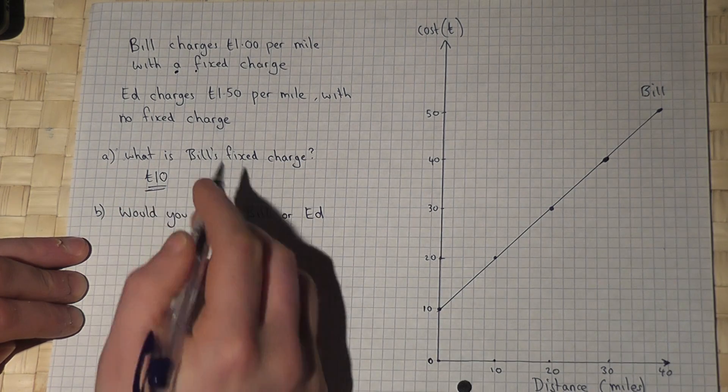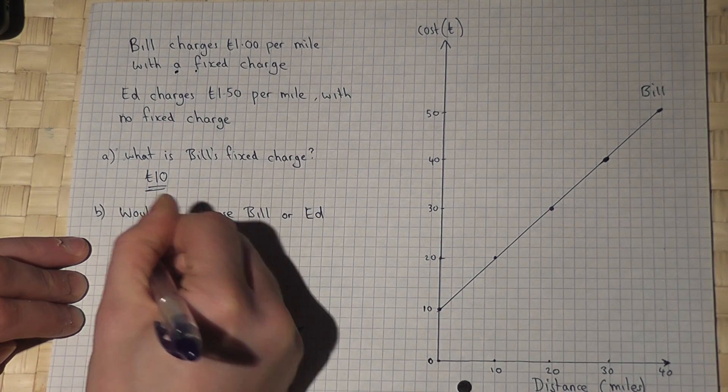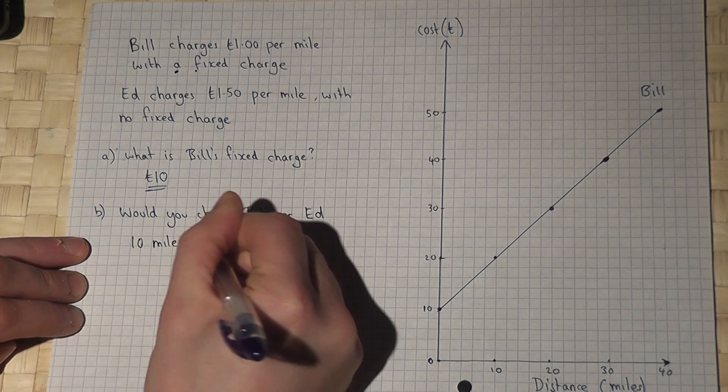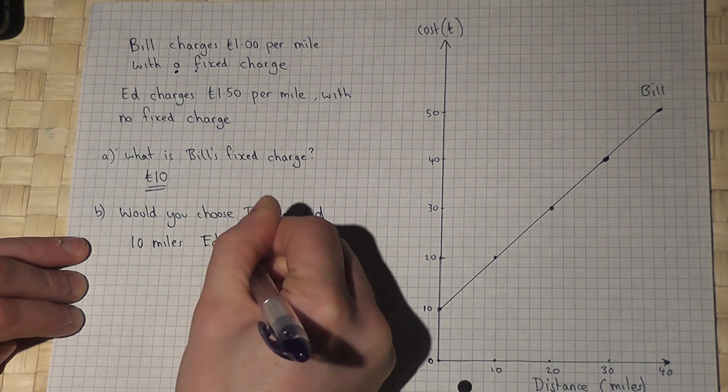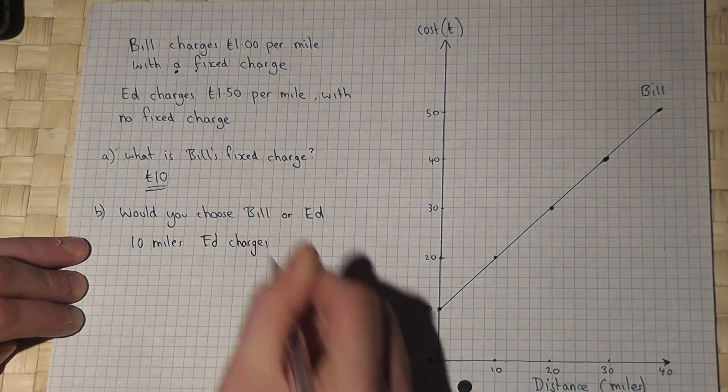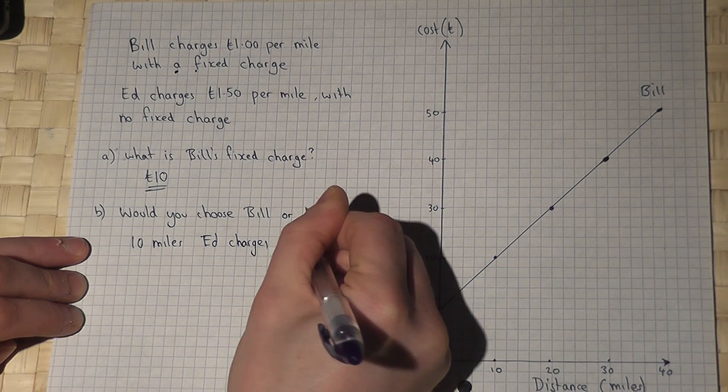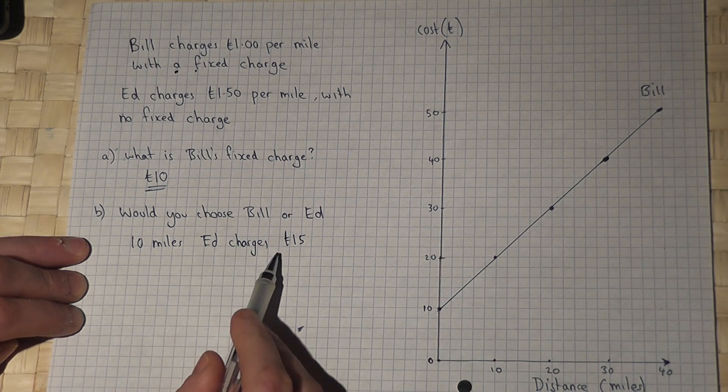Ed charges £1.50 per mile, so every 10 miles, Ed charges £15. I will use this value to plot the graph.